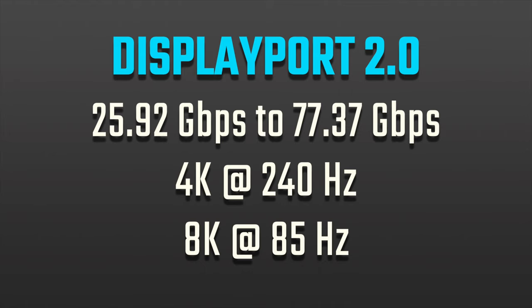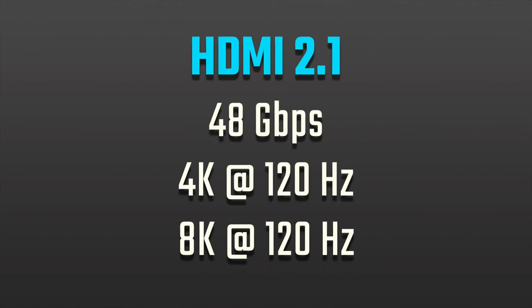DisplayPort 2.0 can transmit 4K at 240 Hz and 8K at 85 Hz. As for HDMI 2.1, which is the latest version, it can transmit 4K and 8K at 120 Hz. So you can see the difference — DisplayPort can output higher refresh rates at 4K, while HDMI 2.1 maxes out at 120 Hz regardless of whether you're using 4K or 8K.